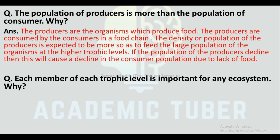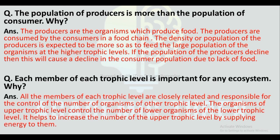Question: Each member of each trophic level is important for an ecosystem — why? All members of each trophic level are closely related and responsible for controlling the number of organisms of other trophic levels. Organisms of the upper trophic level control the number of lower organisms, and the lower trophic level helps increase the number of upper trophic level organisms by supplying energy to them. That is the reason each member of each trophic level is important.